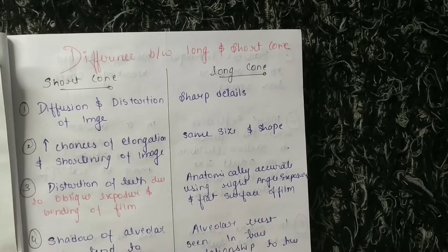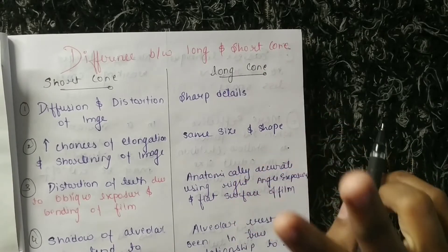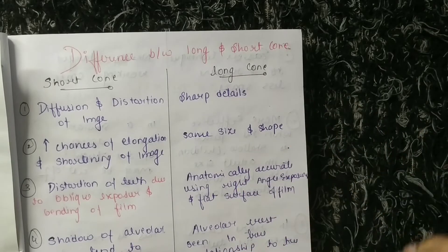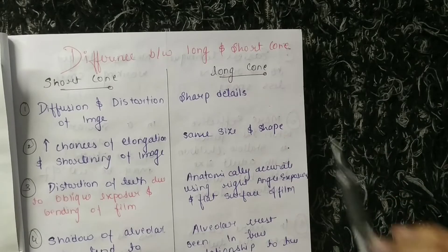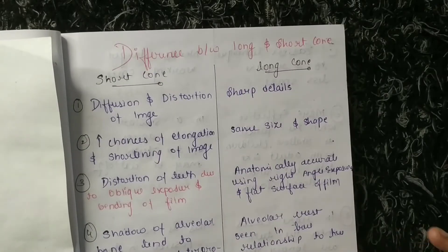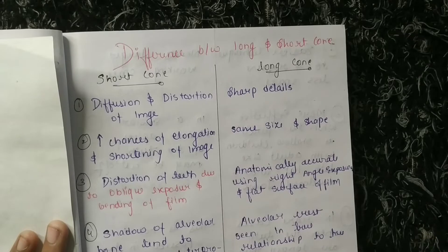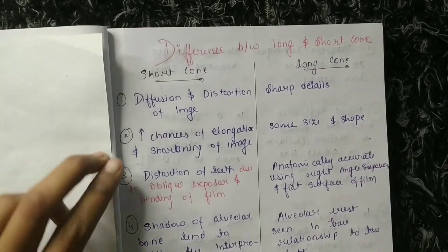Hello everyone, welcome to SAM — Study Art Motivation and Education. In this video we are going to discuss the difference between long and short cone technique. Long cone technique is called right angle technique or paralleling technique, used for taking periapical radiographs. Short cone technique is called bisecting technique. Watch this video till the end.